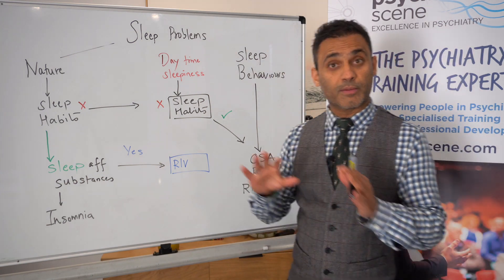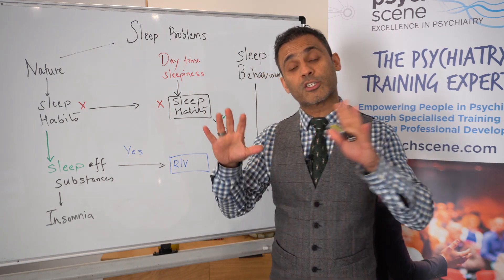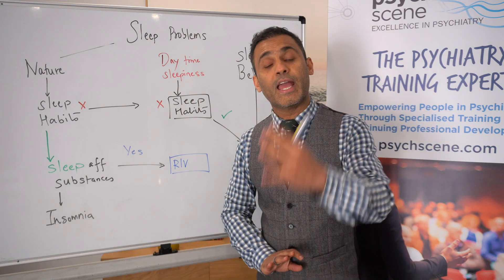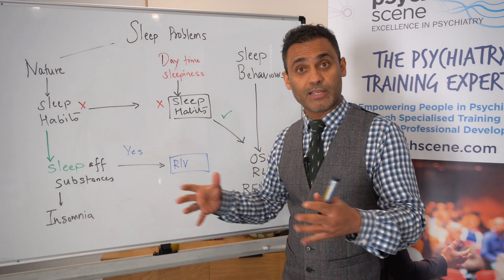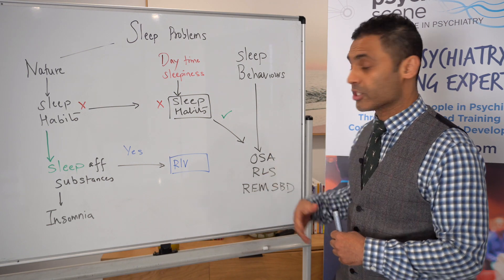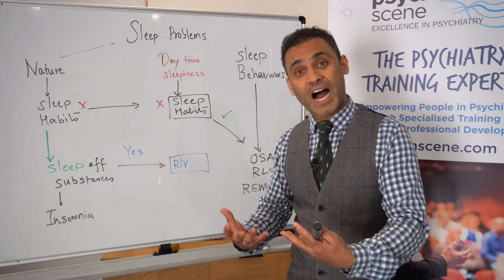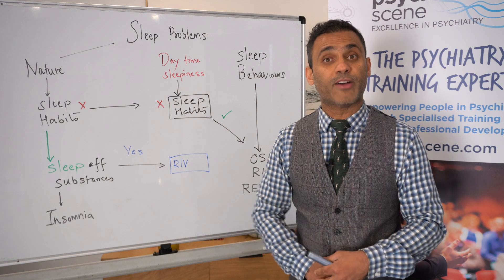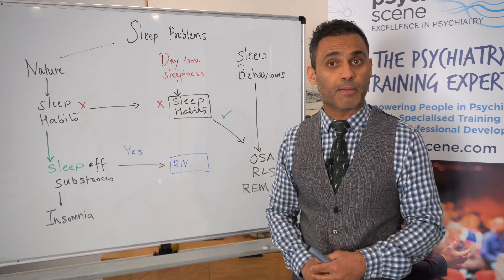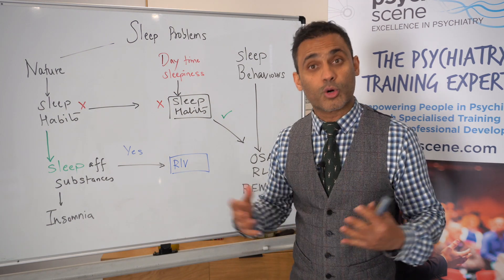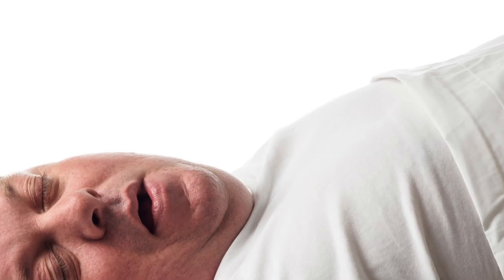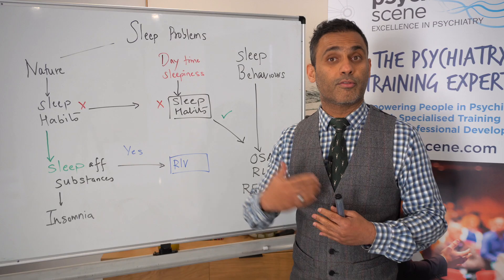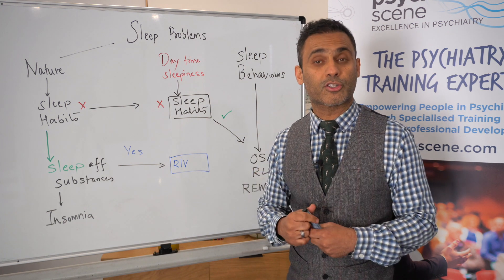We've also got to think about sleep behaviors, because there are certain sleep behavior disorders that can result in significant sleep disturbances. Conditions such as obstructive sleep apnea — we take a collateral from a family member, asking whether the individual snores significantly or has had hypoxic attacks during the night where they stopped breathing. Many family members are able to tell you whether that's occurring.